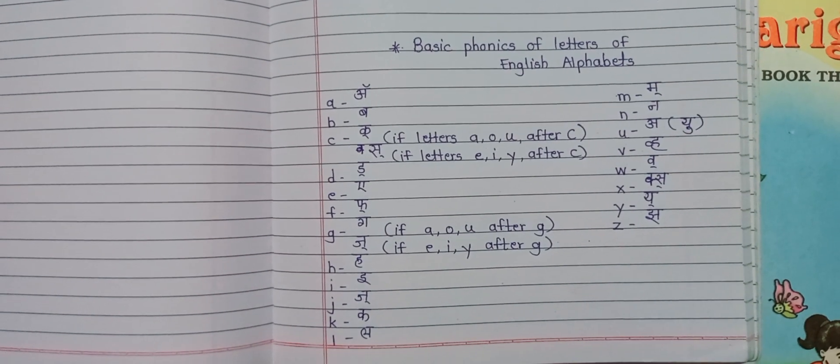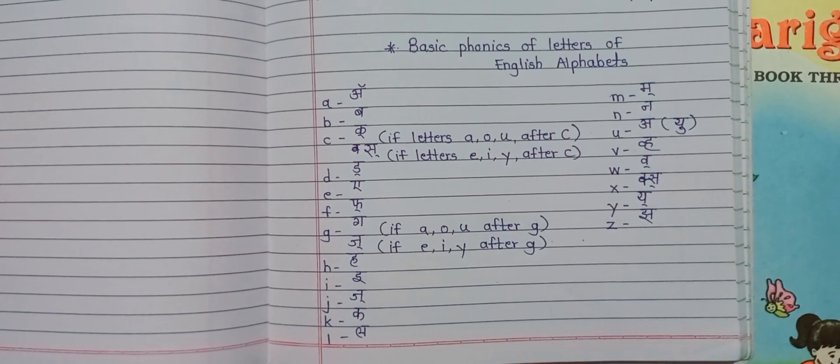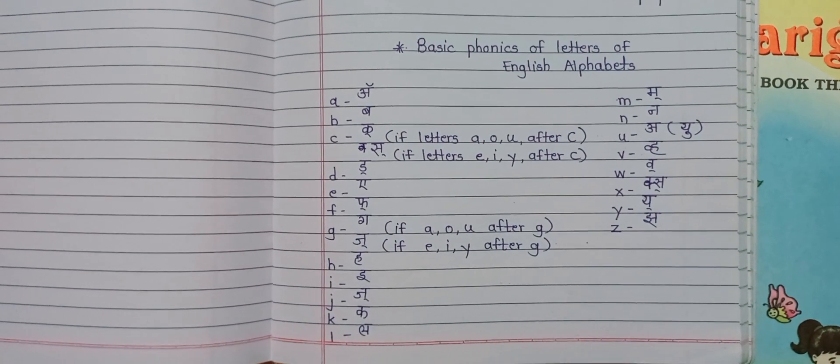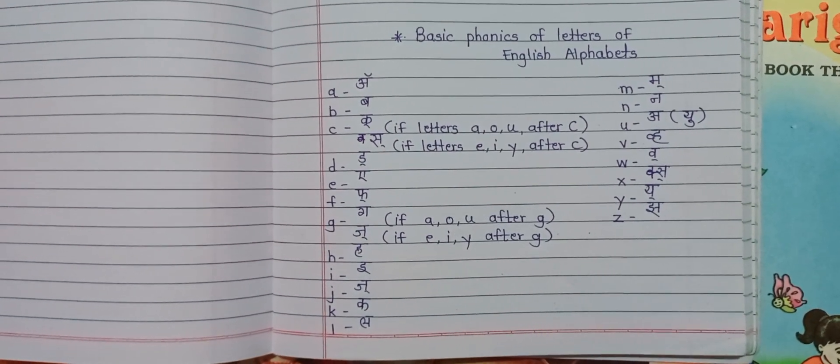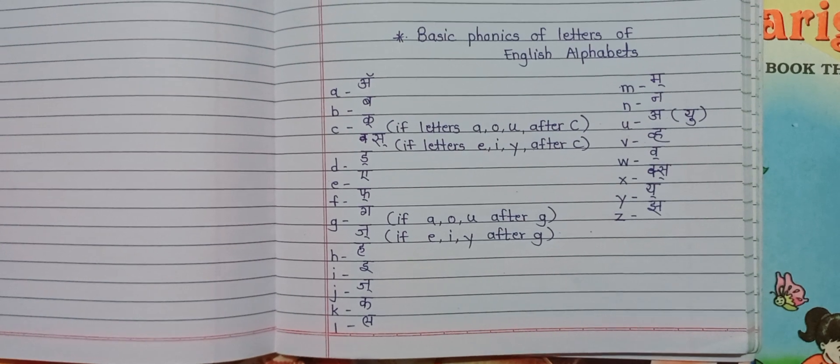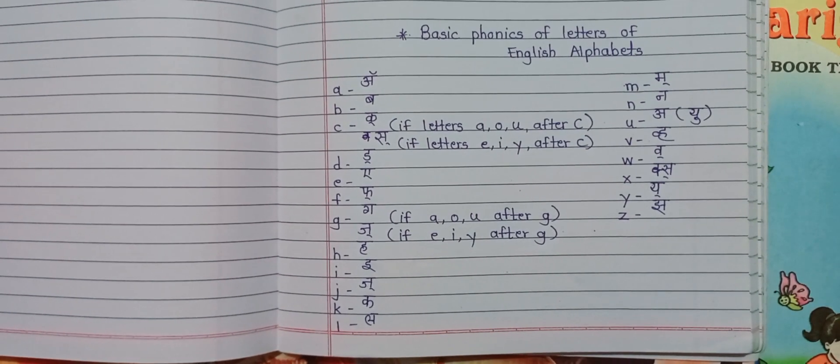Let us discuss today the basic phonics of letters of English alphabets. They are the 26 alphabets of English and their basic pronunciation, their phonics or their sounds.